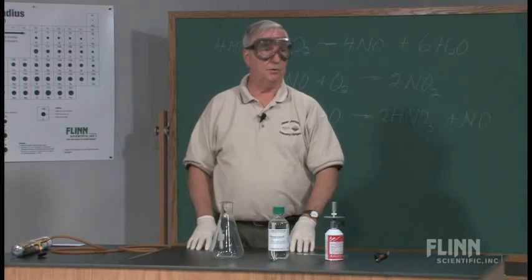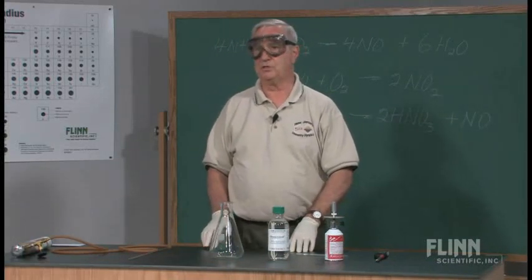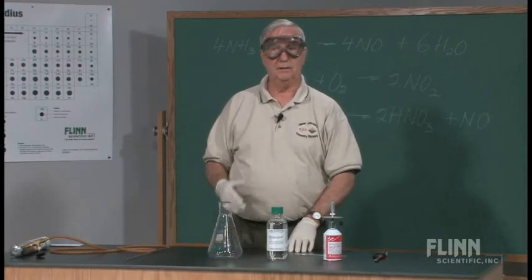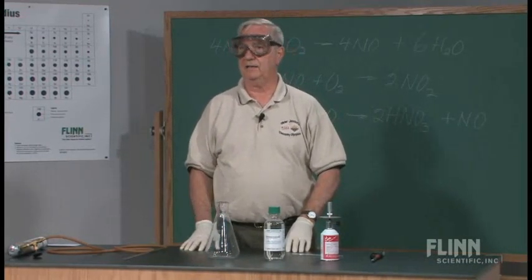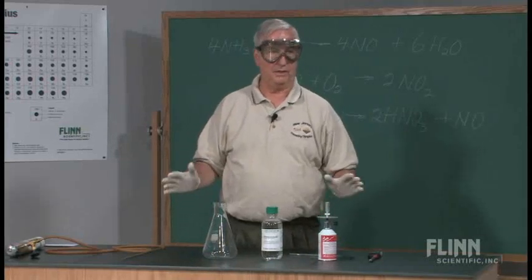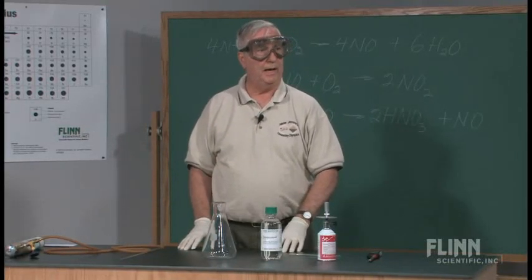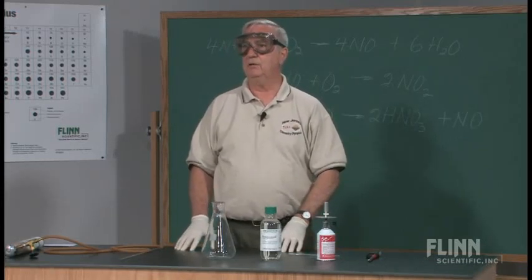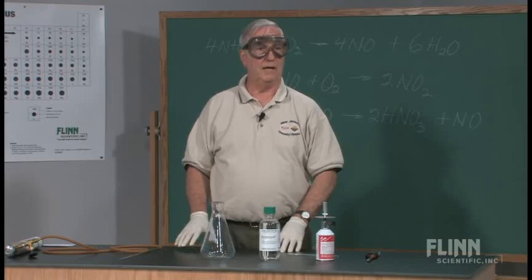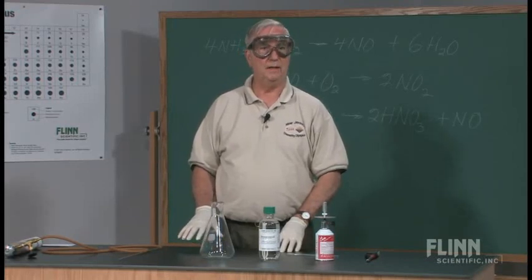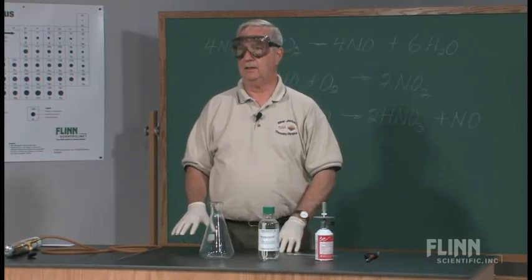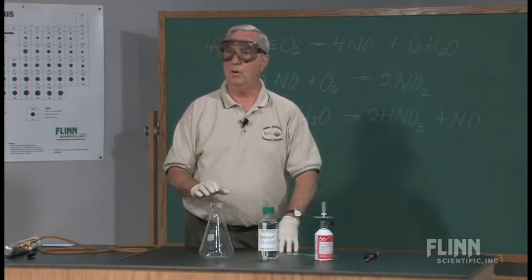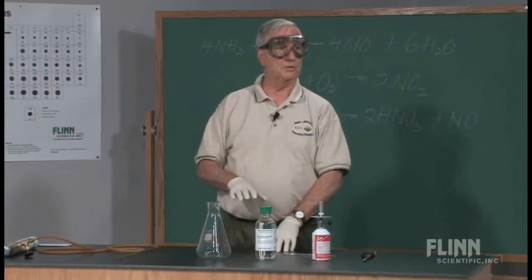Then we come around to the Haber process. Fritz Haber discovered that with the correct combination of catalysts and temperature, pressure, etc., he could shift the equilibrium and actually produce ammonia artificially from atmospheric nitrogen. And he was able to make mass produce ammonia, therefore producing the ammonia required to produce nitrates.